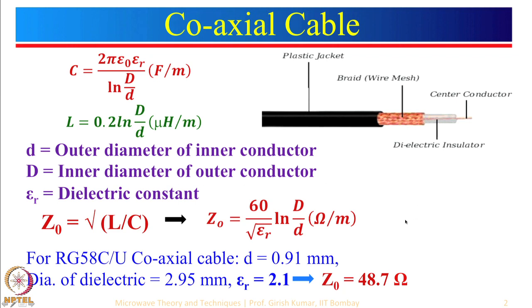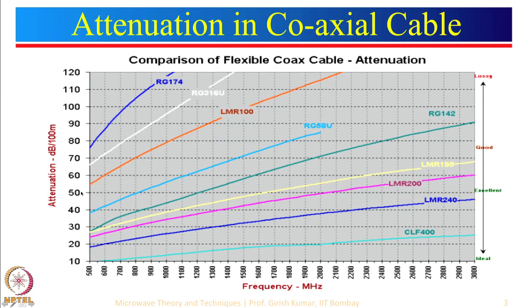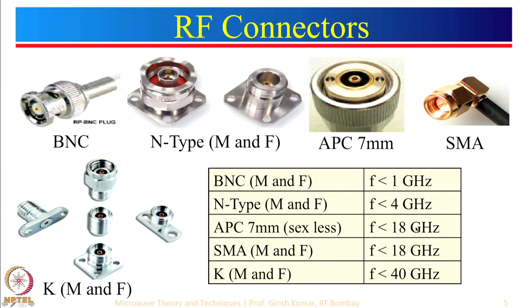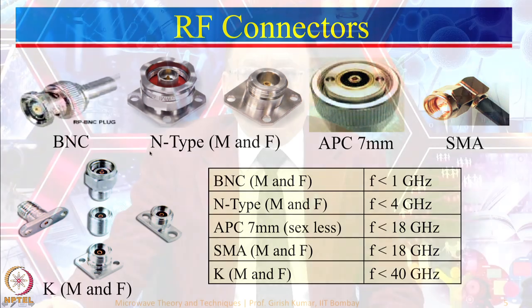This assumes a lossless line, but we did look into what the losses are. One can see that losses can be very high or very low, and of course you pay more for that kind of coaxial cable. We then looked at the specification of one coaxial cable followed by different types of connectors. At RF these days the most commonly used connectors are the N-type or SMA connector type.